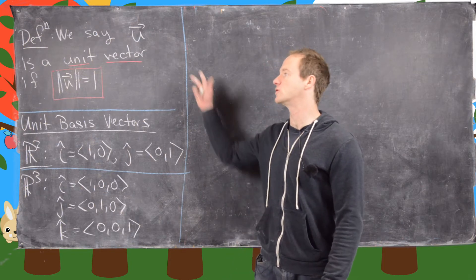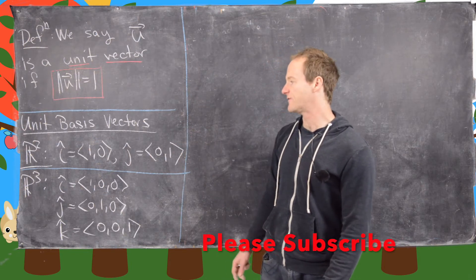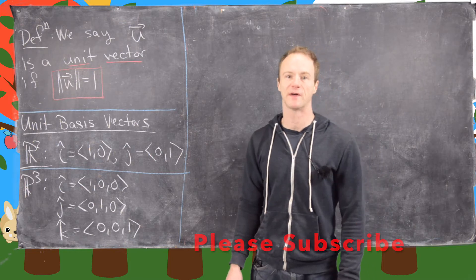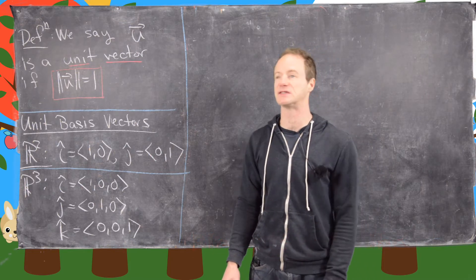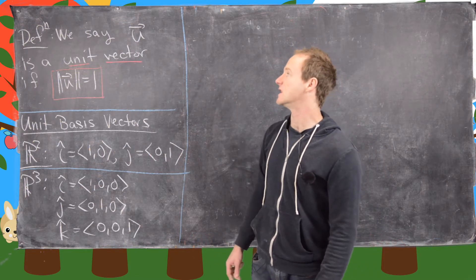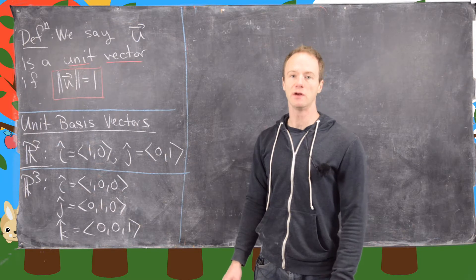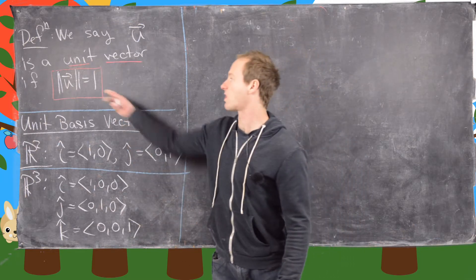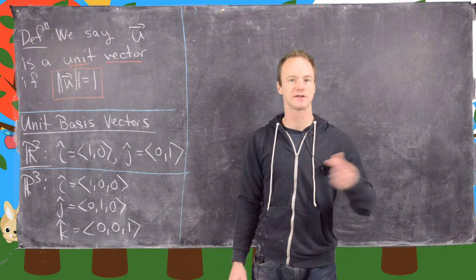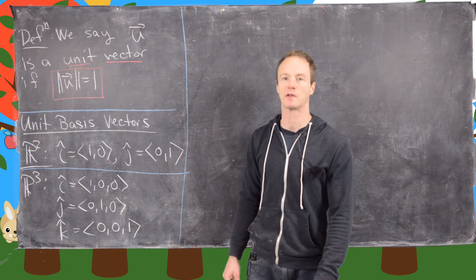In this video we're going to look at the notion of a unit vector, the definition of some unit basis vectors, and some examples. We say u is a unit vector if the length of u equals 1. That's all there is to it — it just has to have length 1.